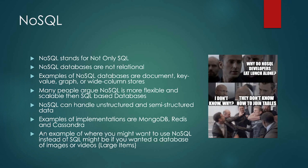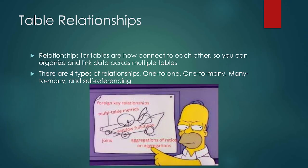For now we are sticking with relational databases — tables of information that are related to each other in some way. Table relationships are how they can connect and link data. We can have different types of relationships: one-to-one, one-to-many, many-to-many, or self-referencing. Technically you can also have many-to-one.